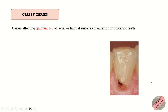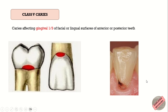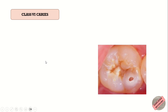Class 5 caries is the caries affecting the gingival one-third of the facial or lingual surfaces of anterior or posterior teeth. So basically, Class 5 involves the gingival third of all teeth, and the surface can be either facial, lingual, or palatal.